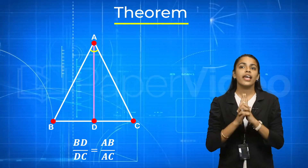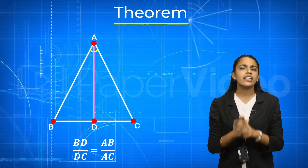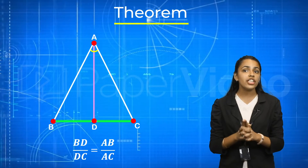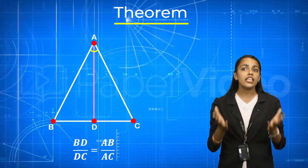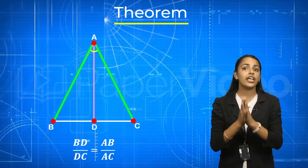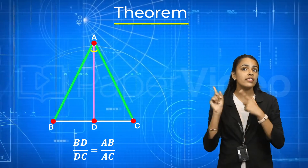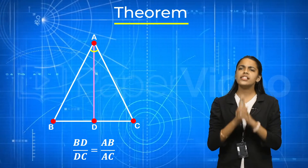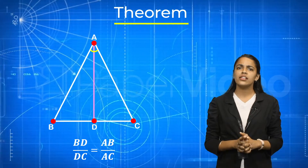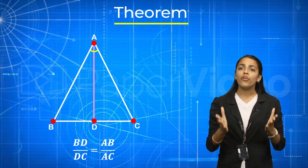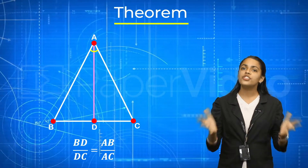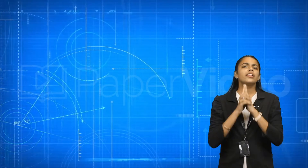That is, AD divides side BC in a ratio that is equal to the ratio of these two sides. This is known as the theorem of internal bisector of an angle of a triangle.